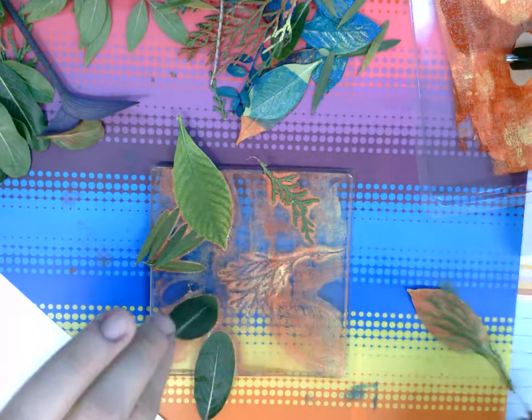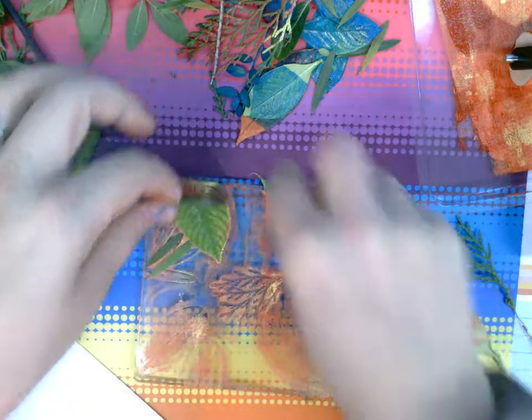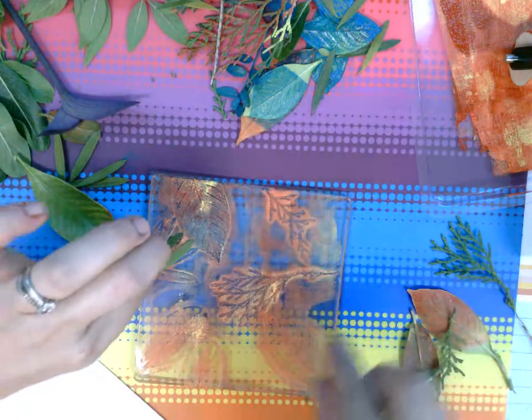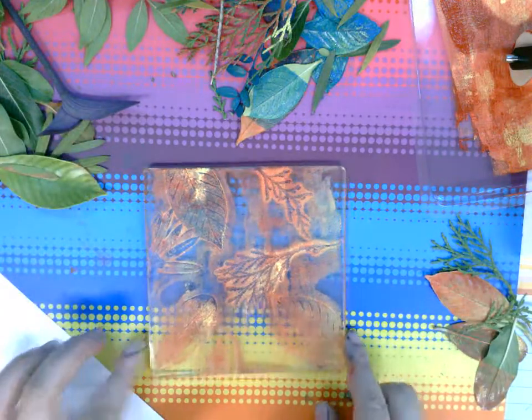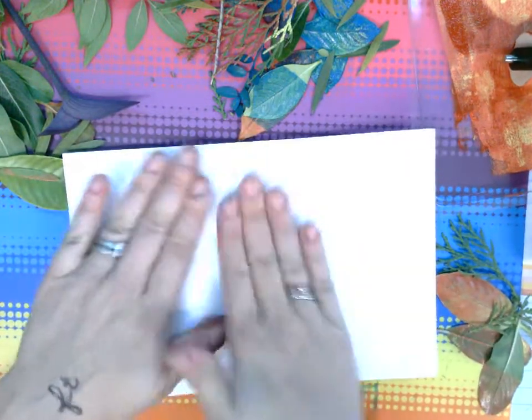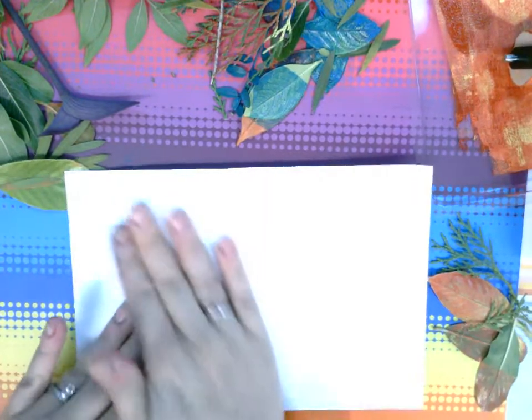All right, next cool part of the printing is taking off your leaves and we're gonna make what's called a ghost print. So this has already been printed on, but guess what, it still has some more magic left in it. So on top of that jelly plate we're gonna take our paper again. Nothing, no more ink, just this is a ghost print. So each time you make and arrange your leaves you should get two prints out of it.